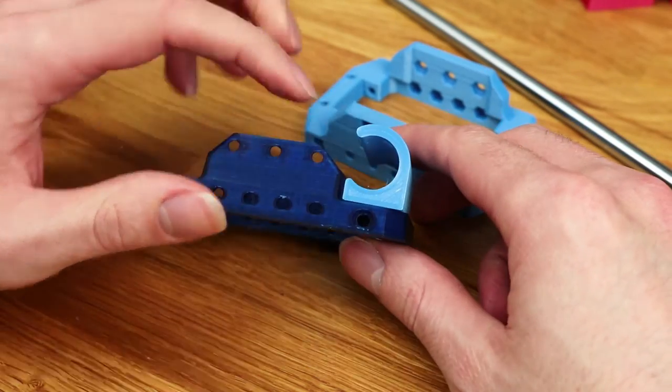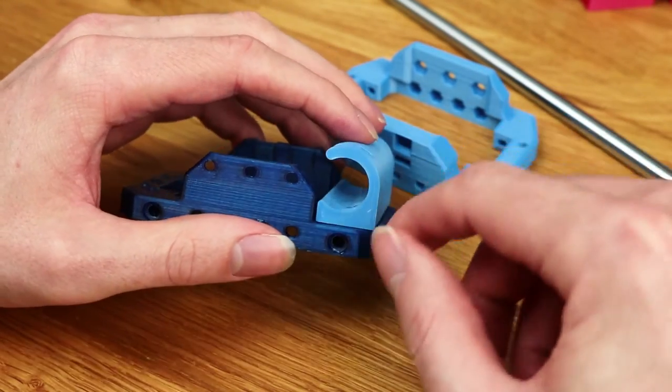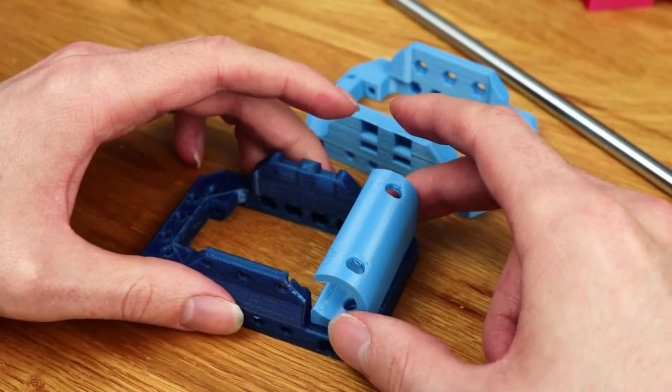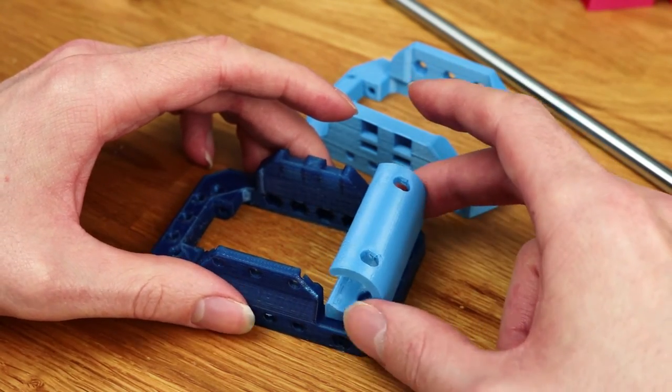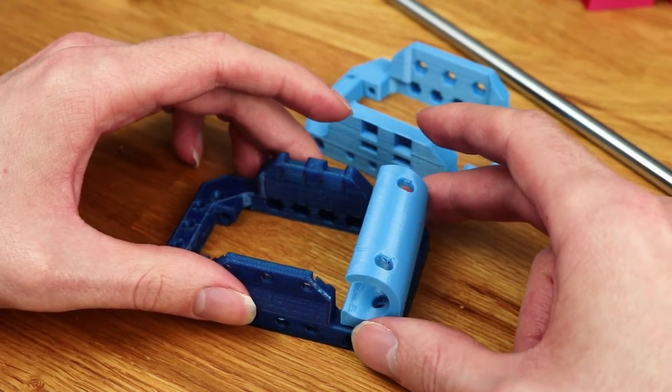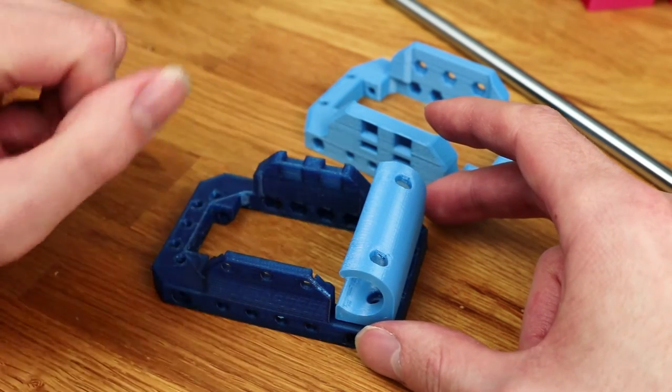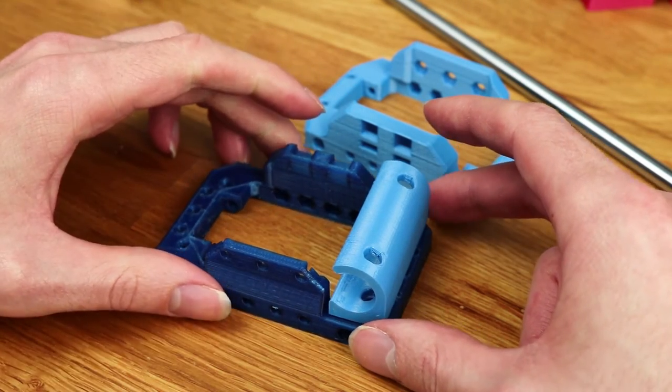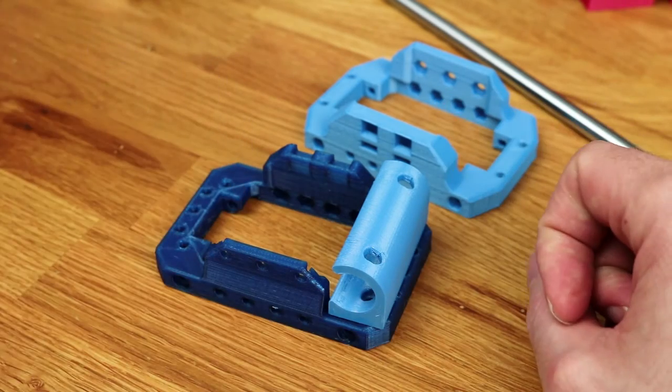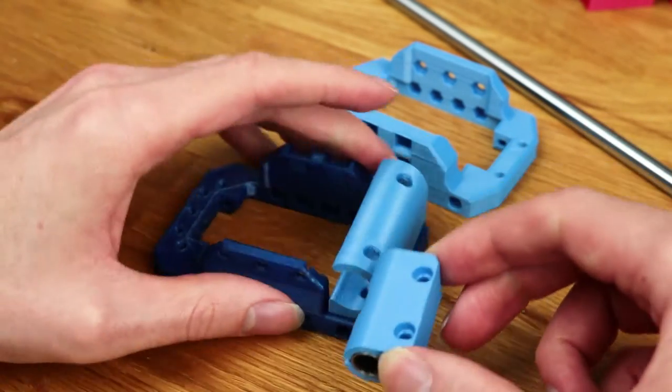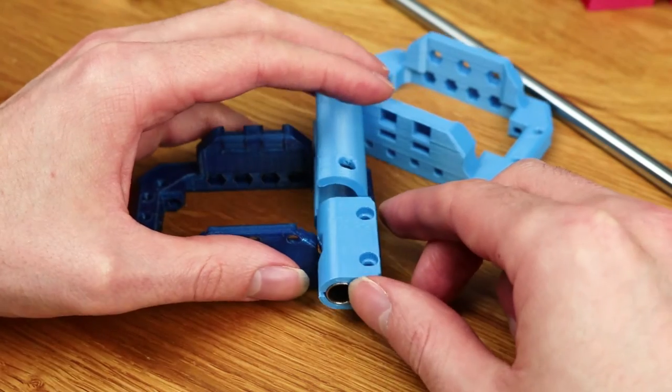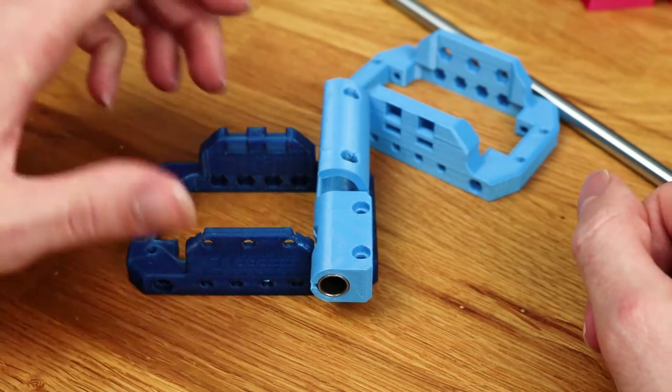In this design you can see the bearing hole is much larger. I got a free sample of Igus bearings which I'm going to be using. And since they're significantly larger than the small bushings that I had before, I had to greatly increase the size of this part. So as you can see, this is much bigger.